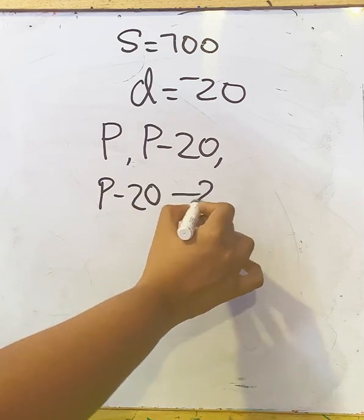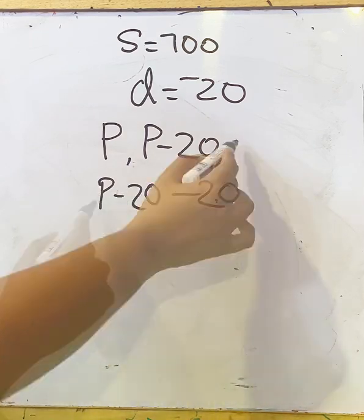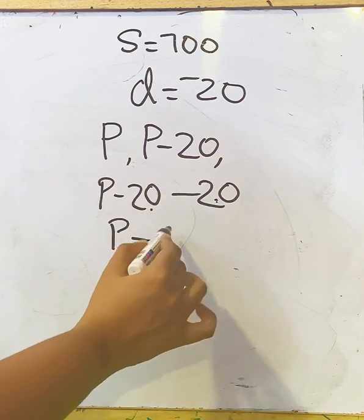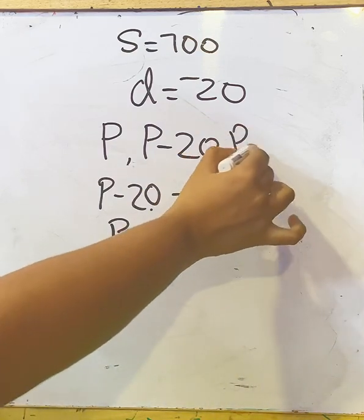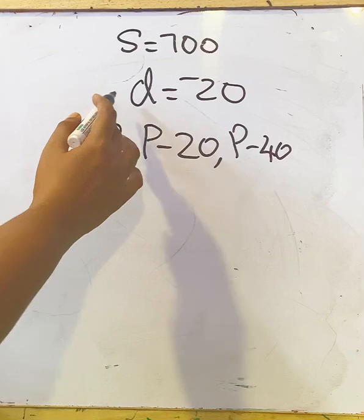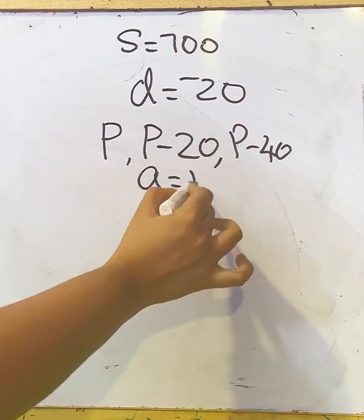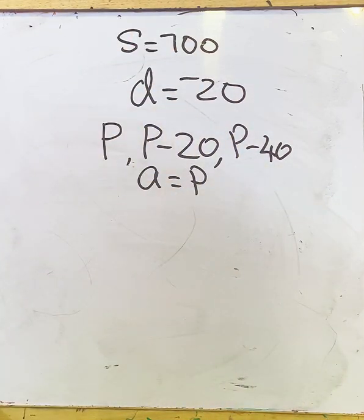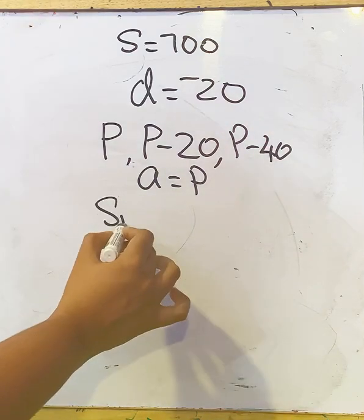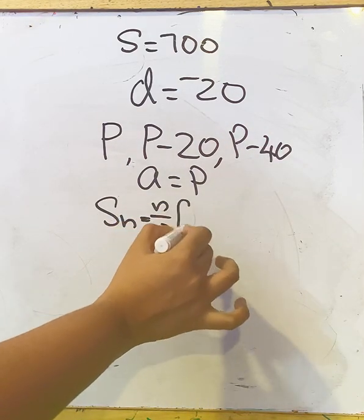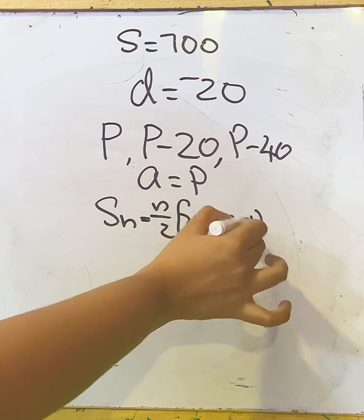Now again, the third term: P minus 20 is the second term minus 20, this is the common difference. You will get the third term P minus 40. So here we can say a, the first term, is P. Now we have to apply it in the formula for sum: Sn = n/2 × [2a + (n-1)d].